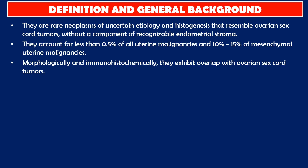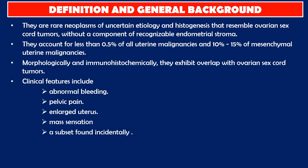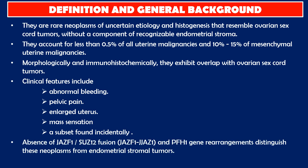Morphologically and immunohistochemically, they exhibit overlap with ovarian sex cord tumors. Clinical features include abnormal bleeding, pelvic pain, enlarged uterus, mass sensation, with a subset found incidentally. Absence of JAZF1-SUZ12 fusion and PHF1 gene rearrangement distinguish these neoplasms from endometrial stromal tumors. No DICER1 or FOXL2 mutations.